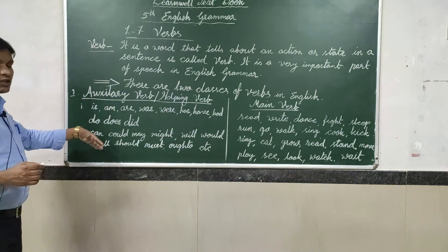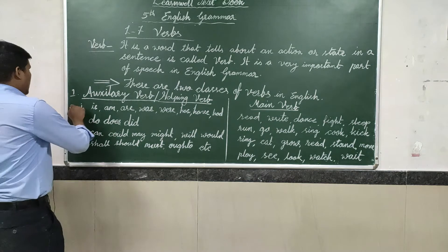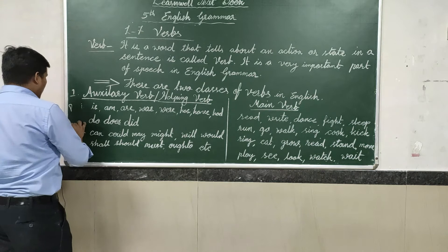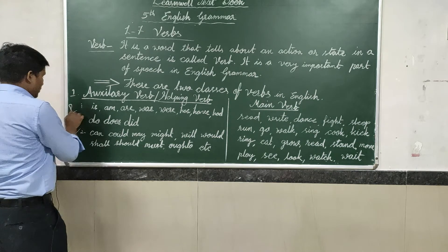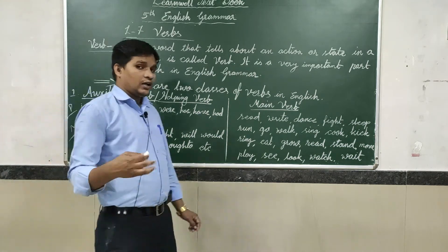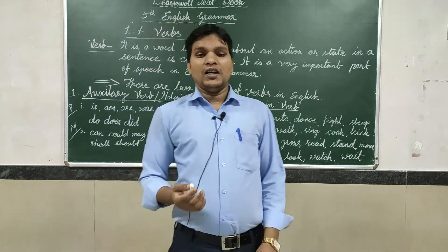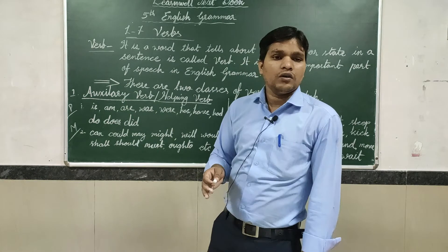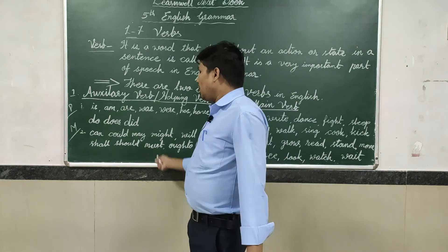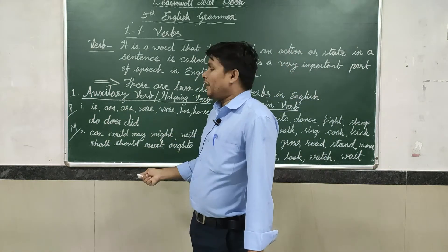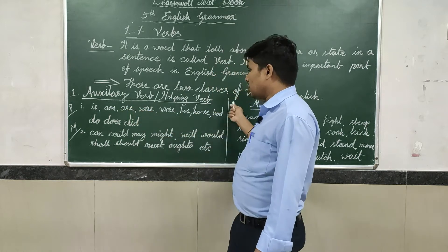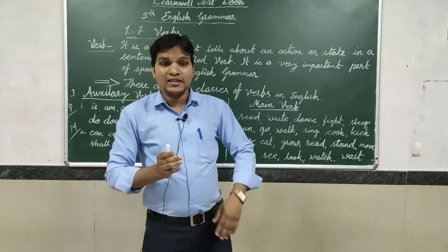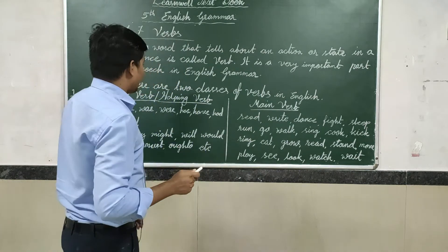Generally, the auxiliary verbs are also of two types. One is primary verbs and one is modal verbs. In higher class, you are going to read about what is primary verbs and what is modal verbs. But simply, just keep in mind which words are primary verbs and which are modal verbs, so you can understand better.